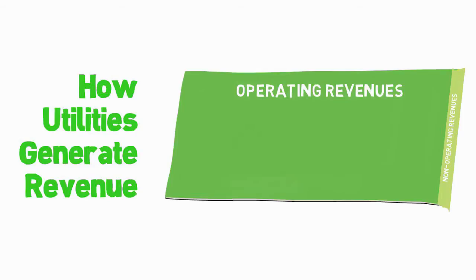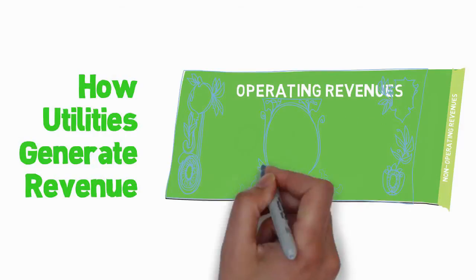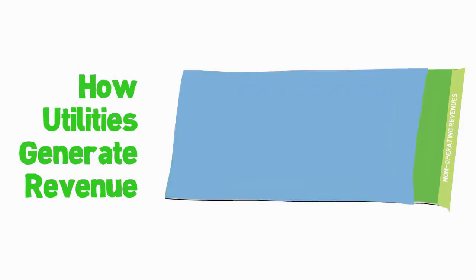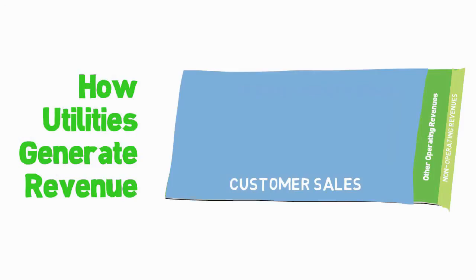Although the breakdown of revenues varies from utility to utility, for an overwhelming majority of utilities, operating revenues constitute the vast majority of all revenues. In particular, sales to customers based on water use and wastewater discharge is the single most significant source of revenue for most utilities. These are revenues derived from the monthly water and wastewater charges. Revenues from customer sales can typically comprise over 90% of a utility's total operating revenues, with the remainder coming from fees, penalties, and so on.